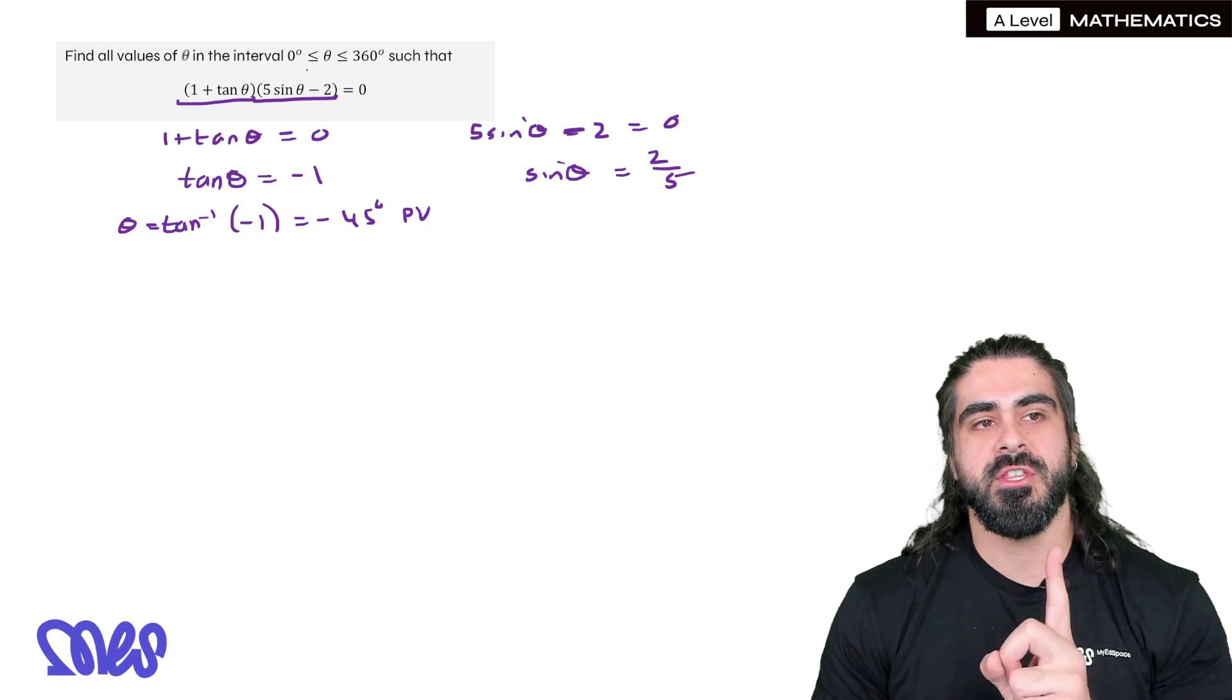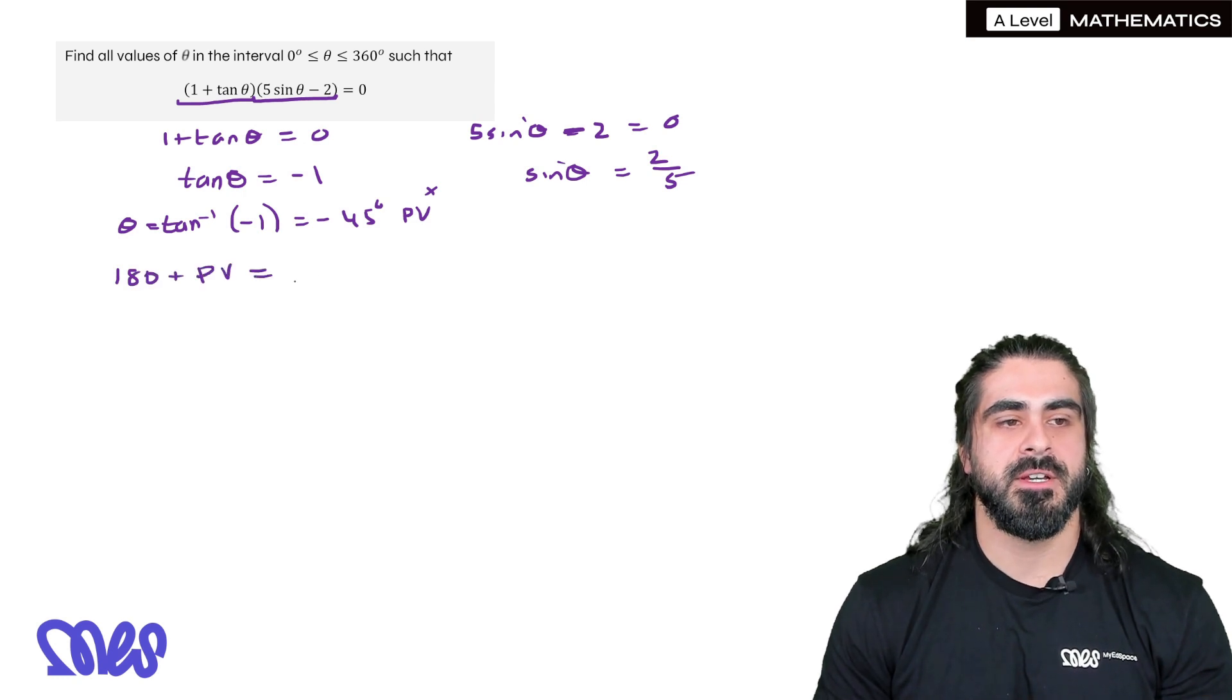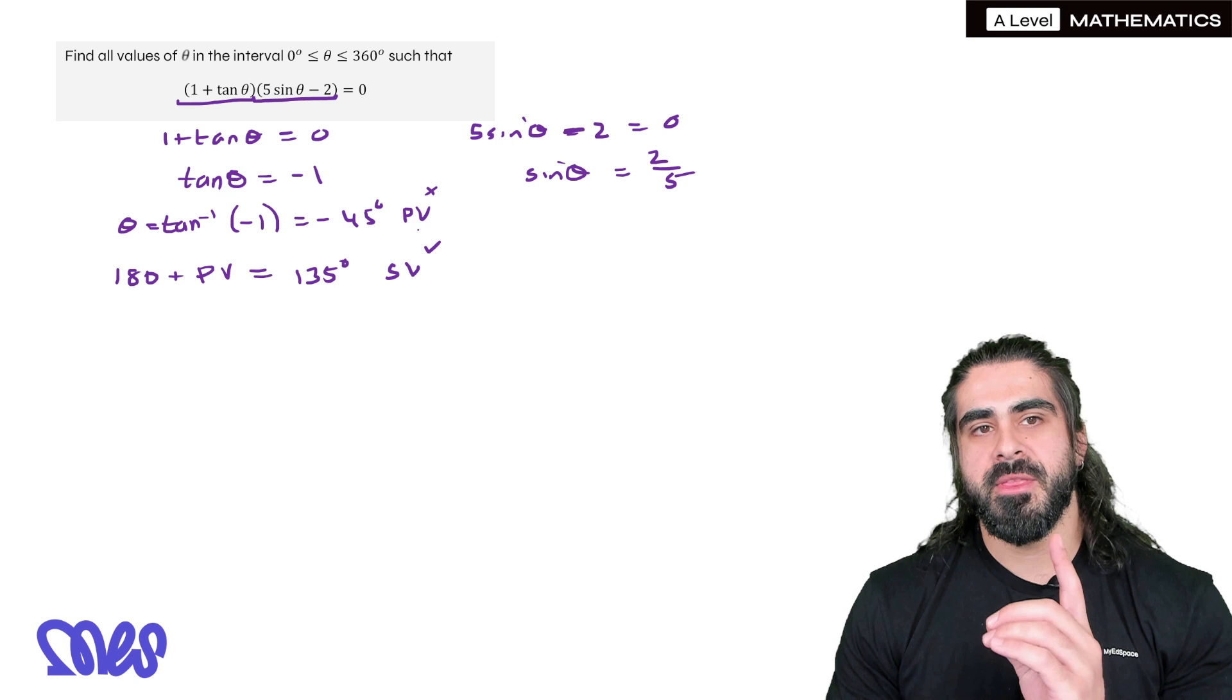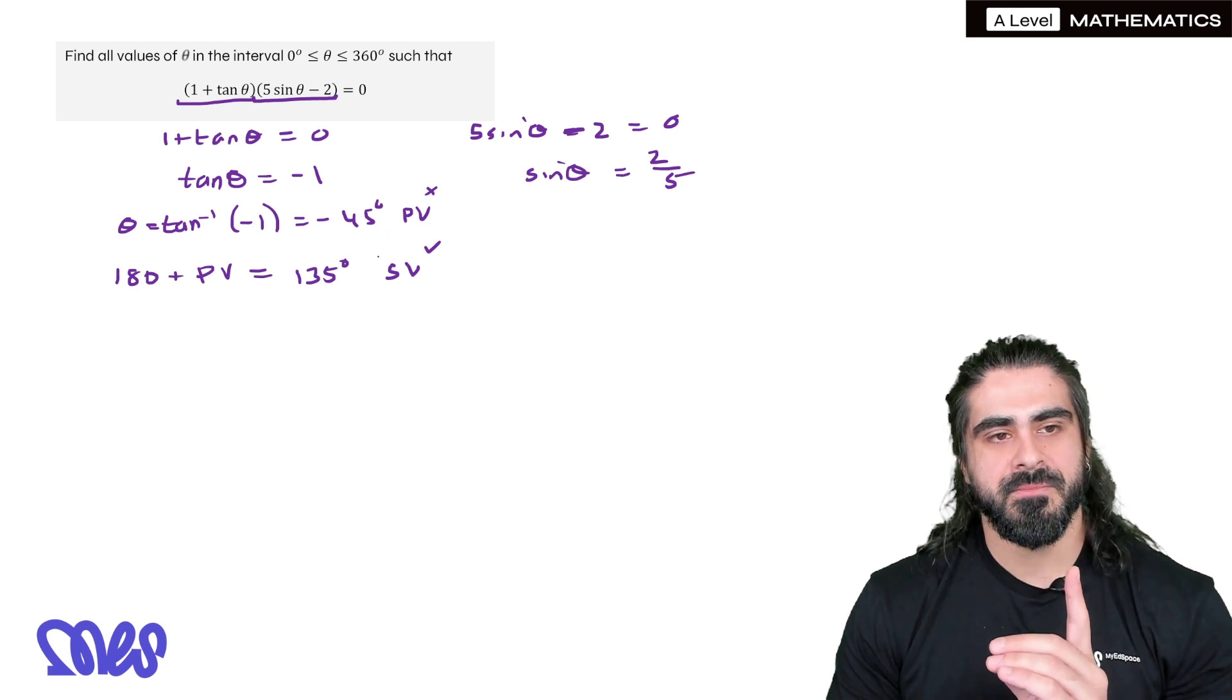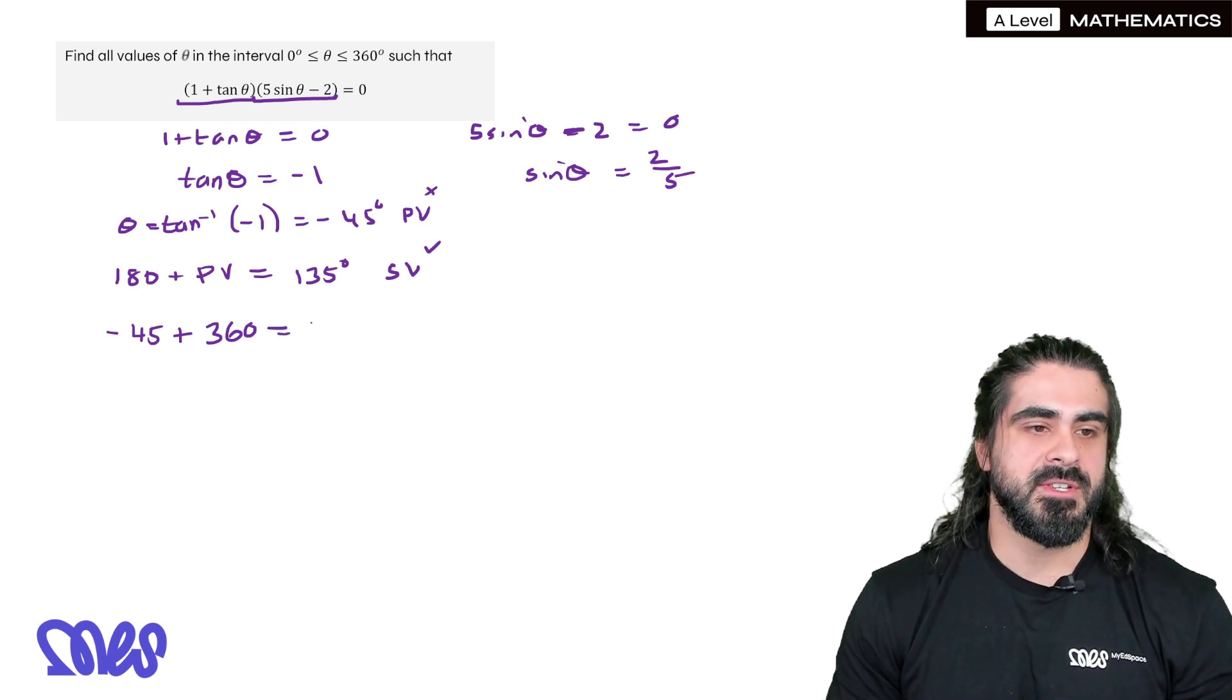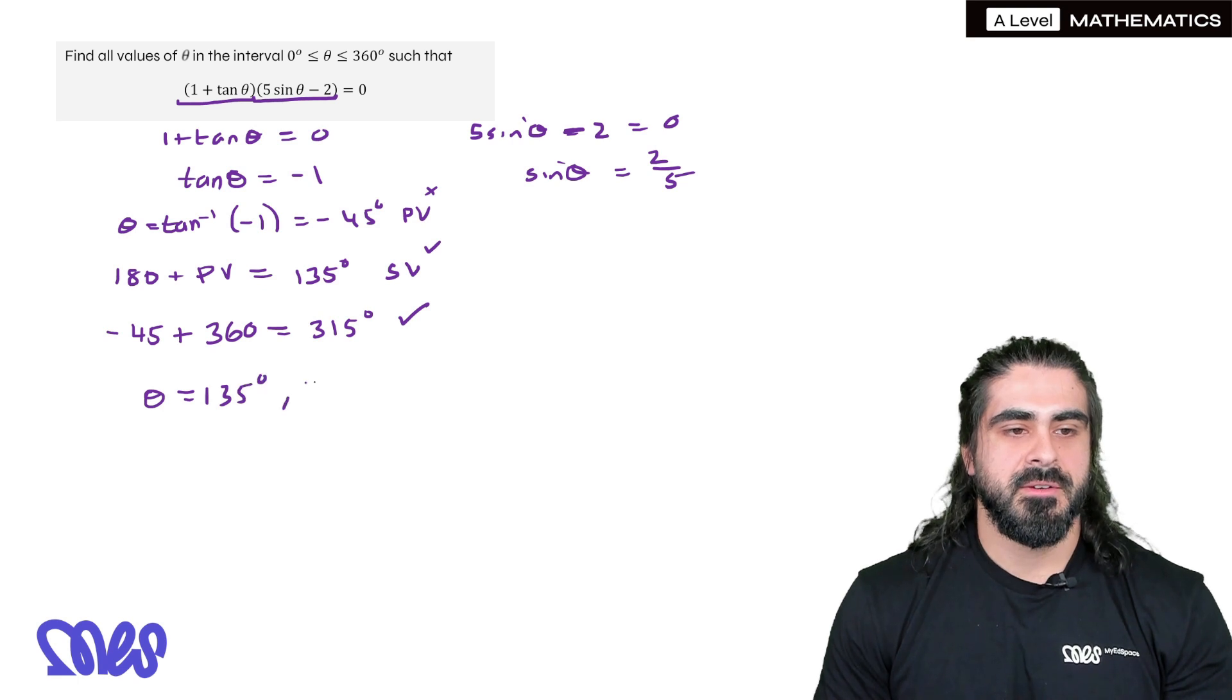You notice actually that the minus 45 is not in the range. Let's just put a cross there. But that doesn't matter. You still use it to find other values in the range. Remember, secondary value. We do 180 plus the primary value. So you're doing 180 plus negative 45, which is just 180 minus 45, which is 135 degrees. And that is in the range. But remember the next step, we have to add or minus 360. You look at the primary value and say, can I add or minus 360 to that? The answer is yes. If you take minus 45 and you add 360, and you have to do in this order, you don't write 360 first. You take the primary value. You're going to add 360. That gives us 315 degrees. That is in the range. If you do the same with 135, it's already in the range. So you're not going to add or minus 360. So the only two solutions here are these two.